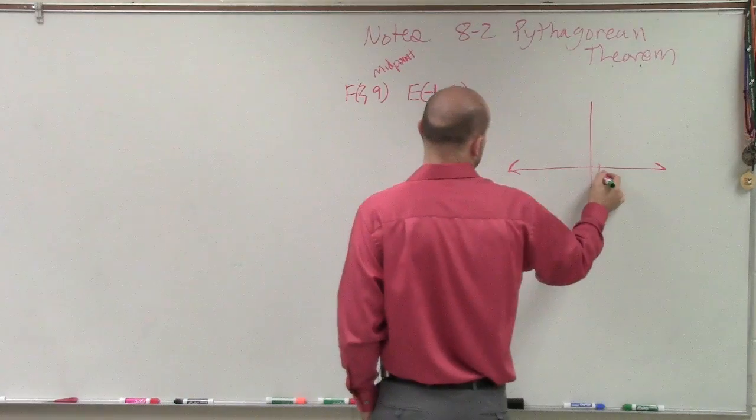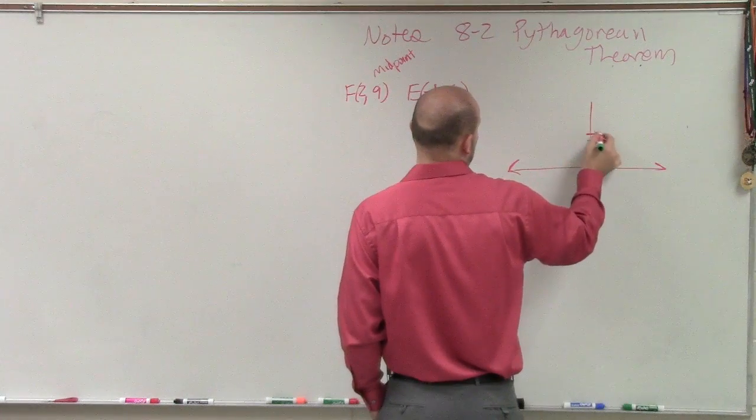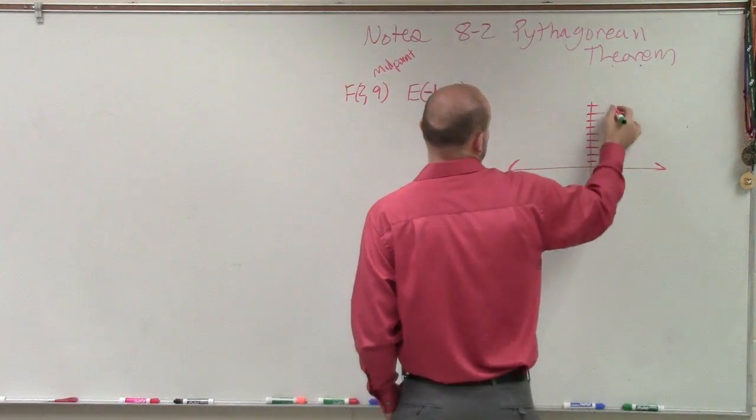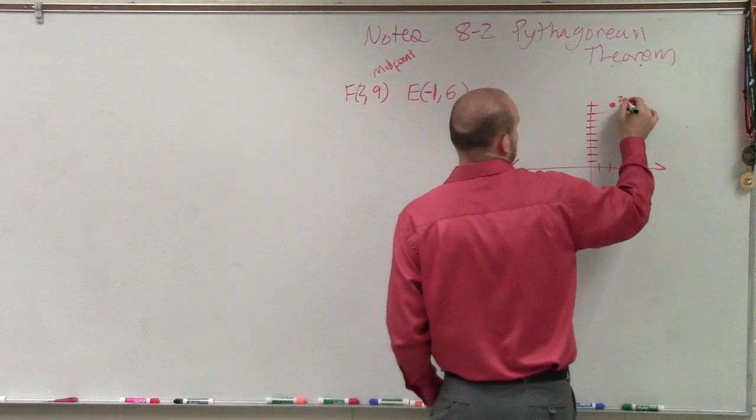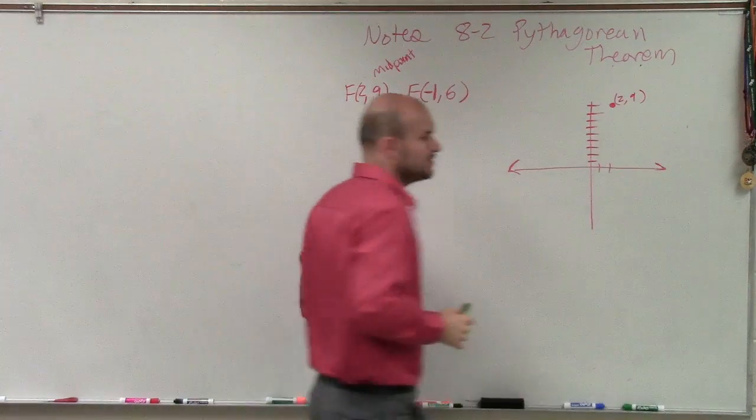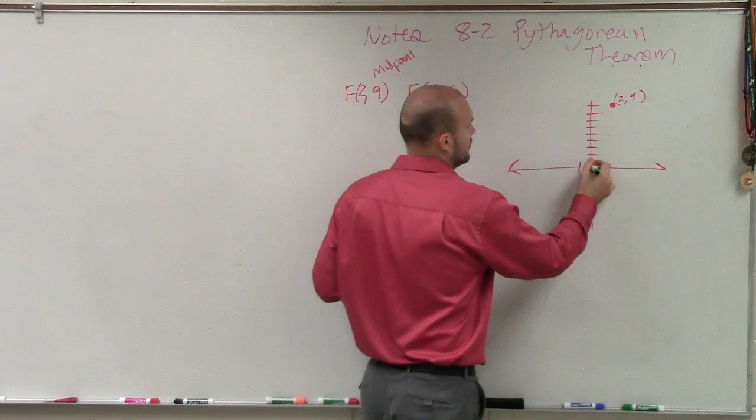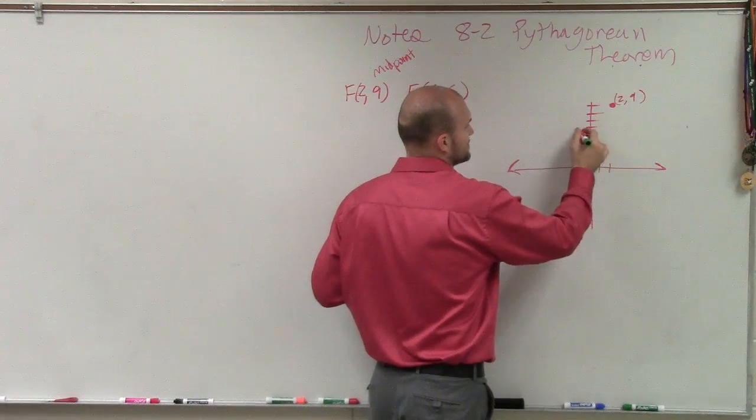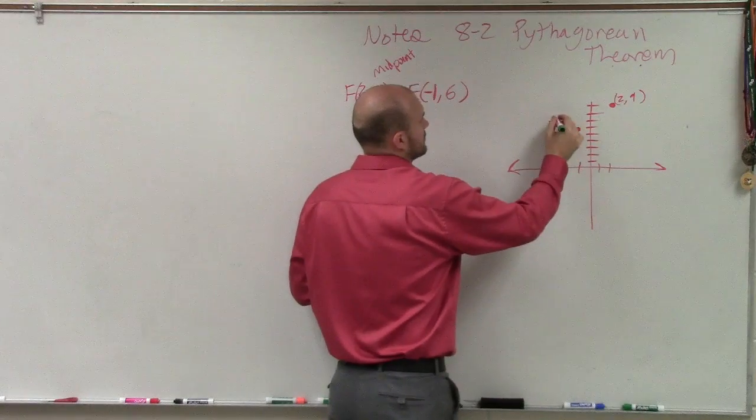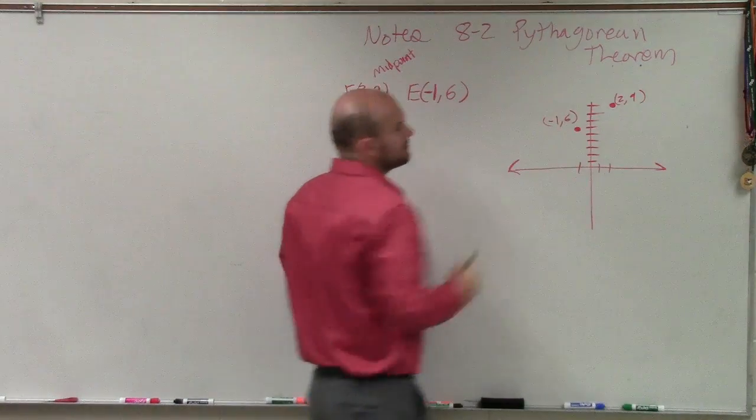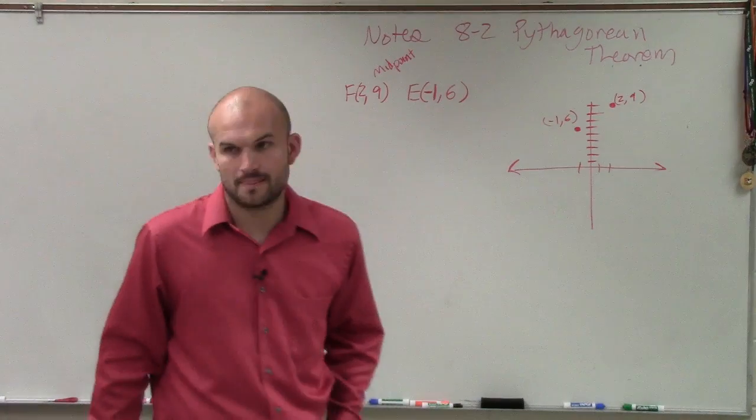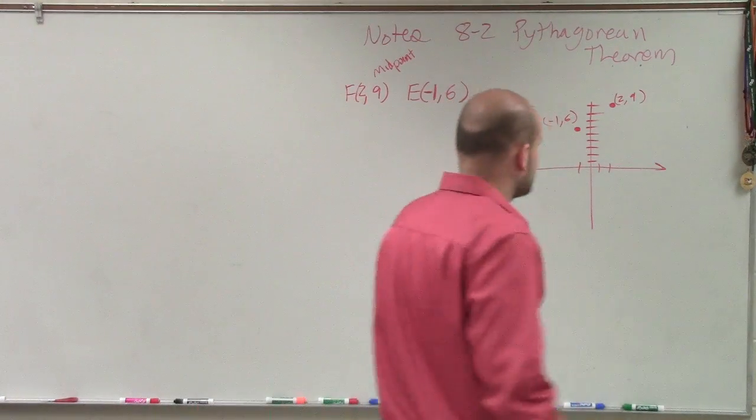So therefore, if I go to 2, 9... so that's 0, 2, 9. And then I also have the point negative 1, 6. OK, would everybody agree with how I have that set up? Yes? I just plotted the two points.